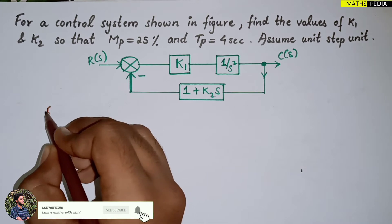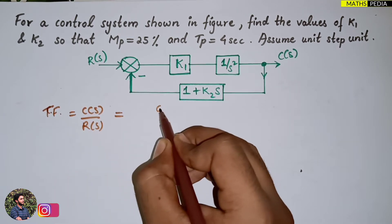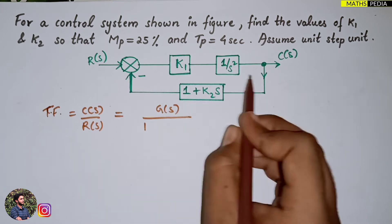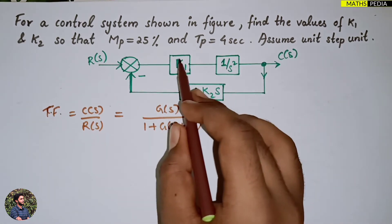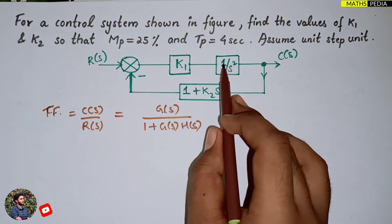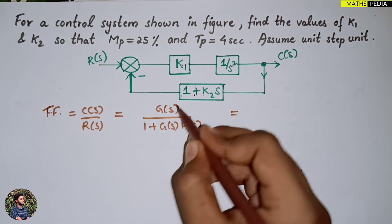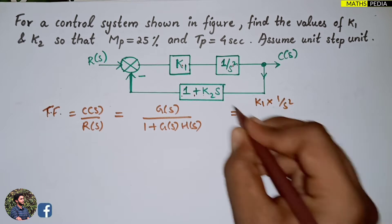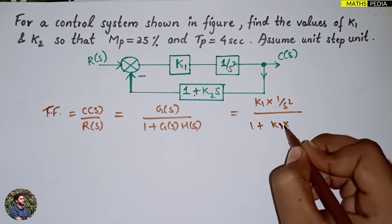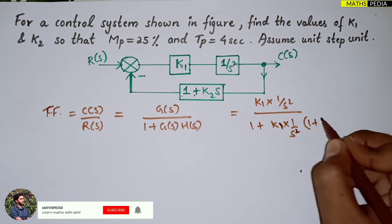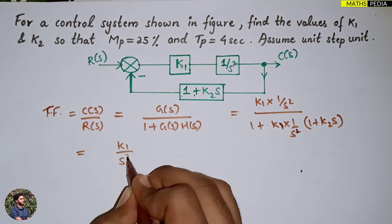Before proceeding, we derive the transfer function C(s)/R(s). Since this is a negative feedback system, the formula is G(s) divided by 1 plus G(s)·H(s). G(s) is k1 times 1/s², and H(s) is (1 + k2·s), both in series, so we multiply them. This gives k1/s² divided by 1 plus k1/s² times (1 + k2·s).